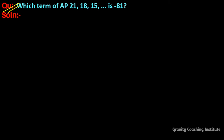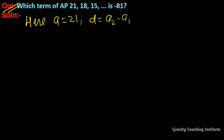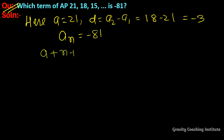Which term of the AP 21, 18, 15, ... is -81? Here, a is equal to 21, and d equals a₂ minus a₁, so d = 18 minus 21 = -3. And aₙ is given as -81. The formula is aₙ = a + (n-1)d = -81.